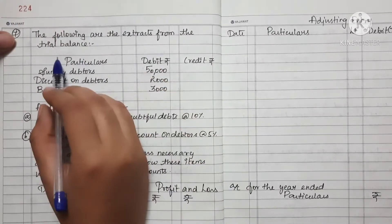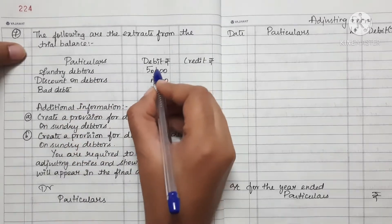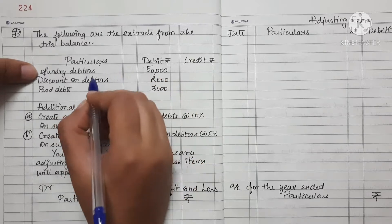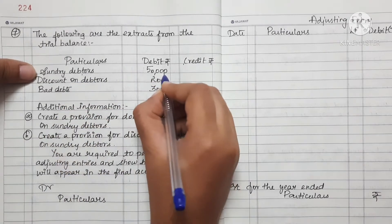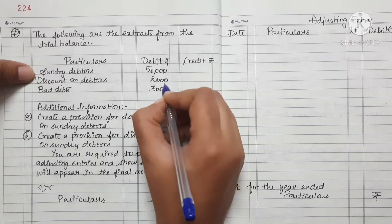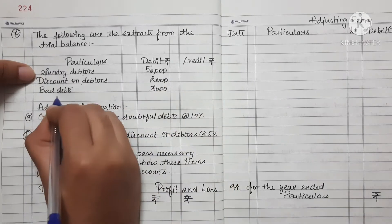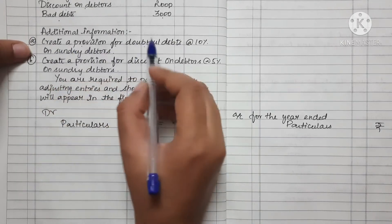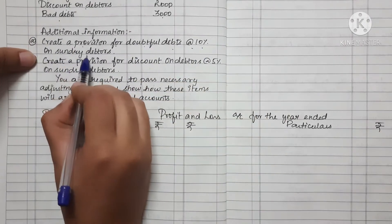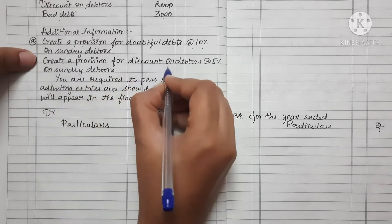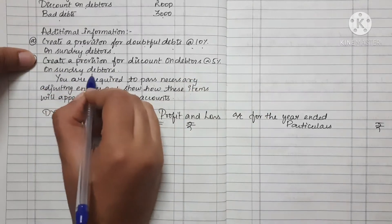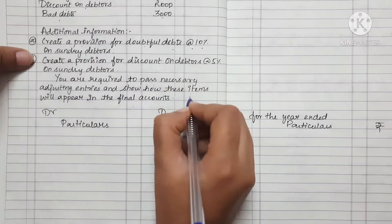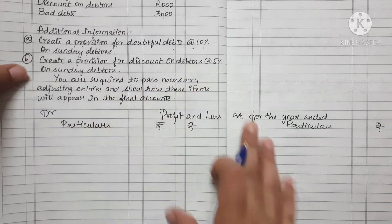The following are extracts from a trial balance. Sundry debtors: debit side 50,000; discount on debtors: debit side 2,000; bad debts: 3,000. Additional information: create a provision for doubtful debts at 10% on sundry debtors, and a provision for discount on debtors at 5% on sundry debtors. You are requested to pass the necessary adjusting entries and show how these items will appear in the final accounts.